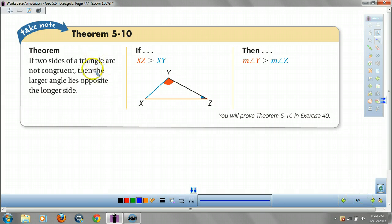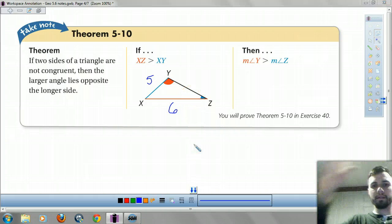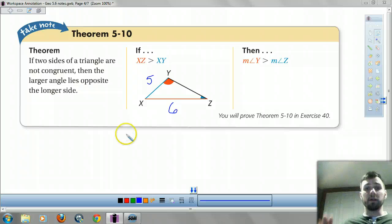Okay, theorem five ten. Again, if two sides of a triangle are not congruent, then the larger angle lies opposite the longer side. So if XZ is bigger than XY, like if this is six and this is five, then Y is going to be bigger than angle Z. I'm going to pause this. Hey, guys. I'm back. I'm going to use the video. I've got to pause this, though, because I realize. So I guess I can't get my video to show while I'm filming it, guys. So I don't know what you can see.